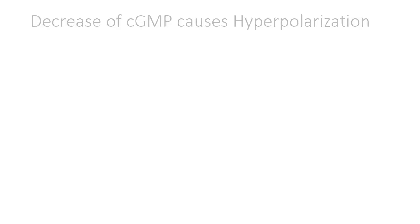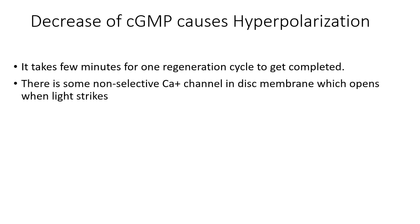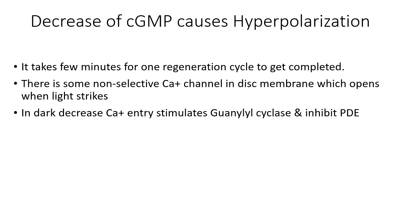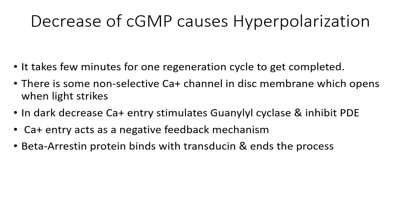In summary: the decrease in cyclic GMP causes hyperpolarization, and after hyperpolarization there is no signal passing through the synaptic terminal. This whole process takes only a few milliseconds. Additionally, non-selective calcium channels open during daytime and calcium stimulates phosphodiesterase activity, further decreasing cyclic GMP. In the dark, decreased calcium entry stimulates guanylate cyclase and inhibits phosphodiesterase — a reverse effect. Thus, calcium entry during daytime acts as a negative feedback mechanism, and a protein called beta-arrestin binds with the transducin complex to end the process, allowing depolarization to resume.